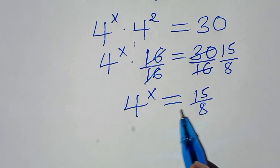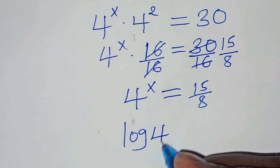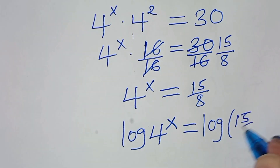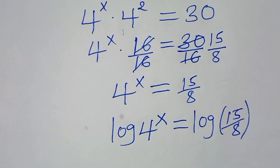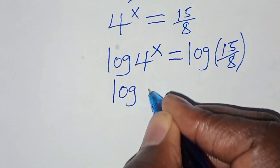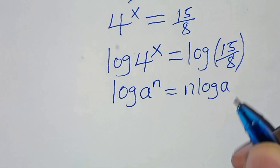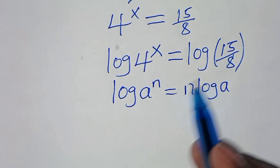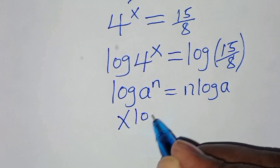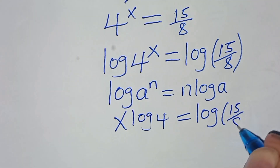For the value of x, we introduce logarithm on both sides, so that here we have log of 4 to the power x equals log of 15 over 8. Now log of 4 to the power x is in the form of log of a to the power n, which we can express as n times log a. This is the power rule property of logarithm. Applying this property, log 4 to the power x becomes x times log 4, and this is equal to log 15 over 8.